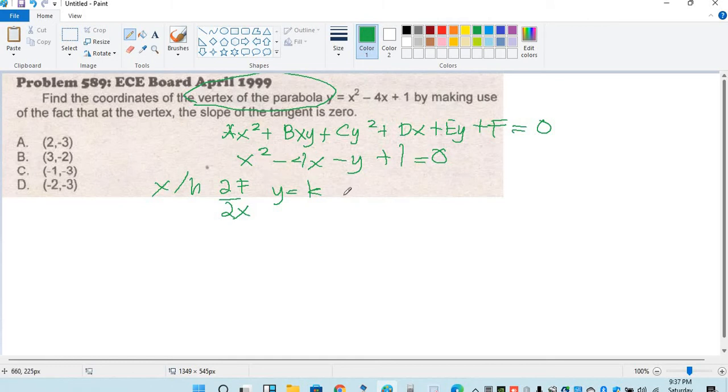Anong derivative ng x squared? 2x minus 4 is equal to 0.